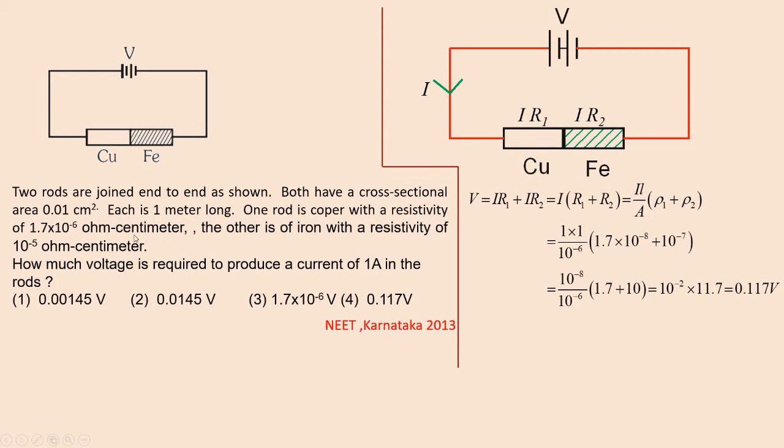Then for iron, it is 10⁻⁵ ohm-centimeter, which will be equal to 10⁻⁷ ohm-meter.